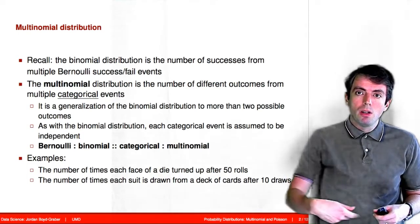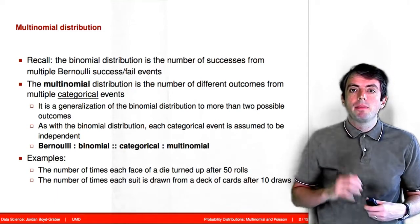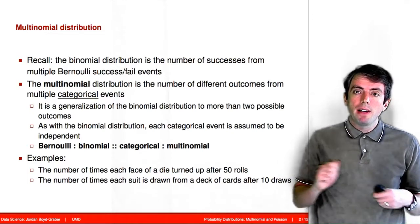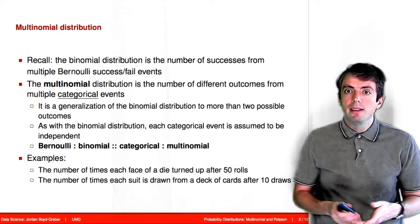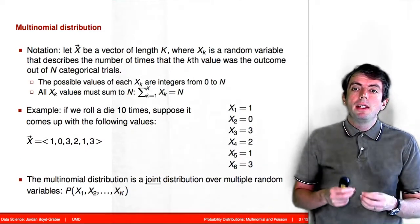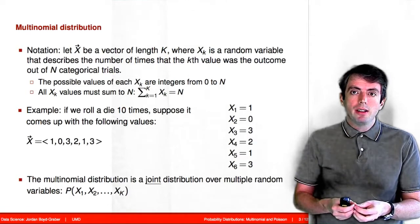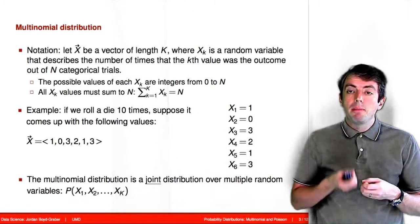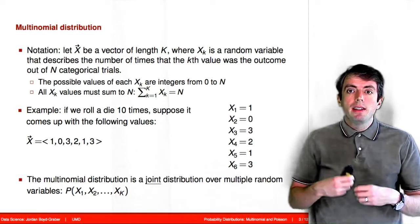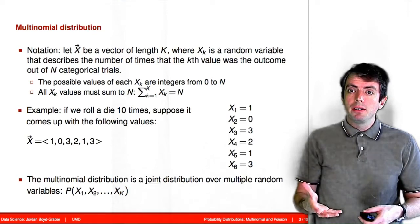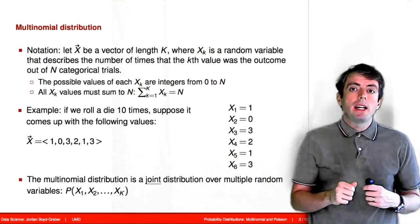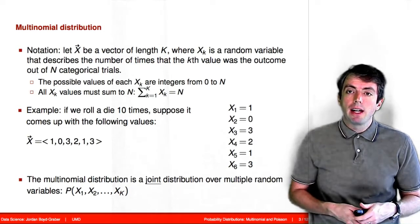Similarly, if you roll a die 50 times, you could count up how many times you get each of the different values, and that final result is modeled by a multinomial distribution. Just like how we modeled the binomial distribution with a number of trials n and a probability of success, we're going to model the multinomial distribution with a number of trials n and a vector of probabilities for each of the outcomes, just like we have for the categorical distribution.